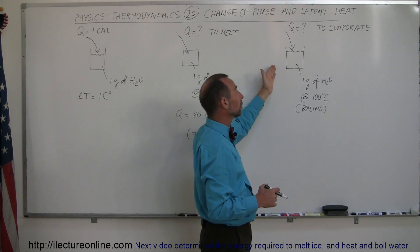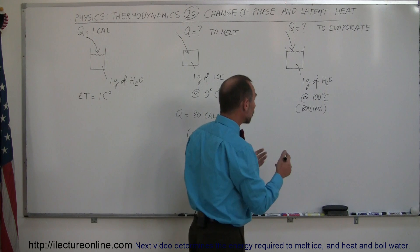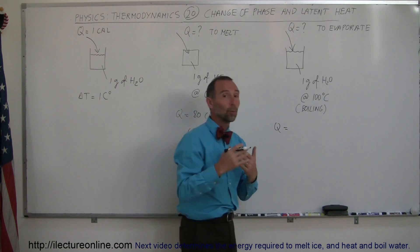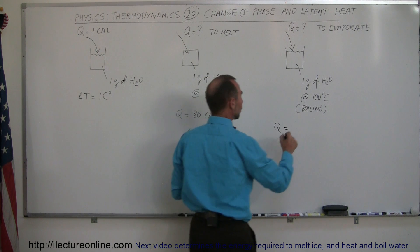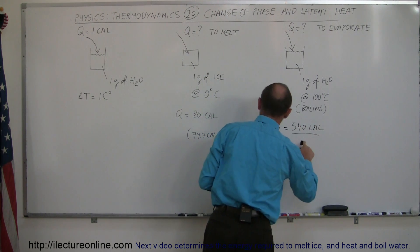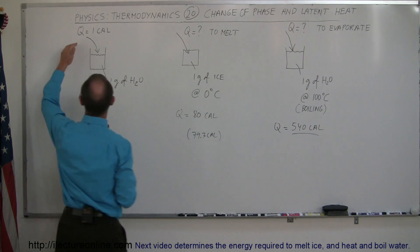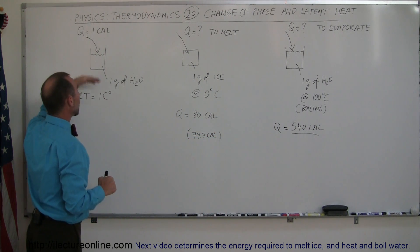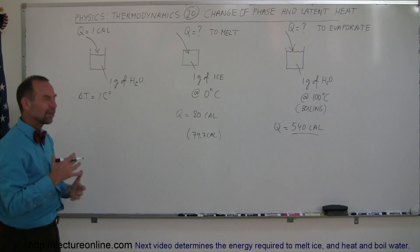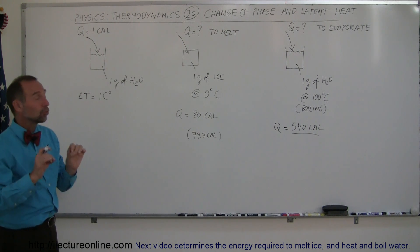When you take boiling water and want to completely evaporate it, it takes even more heat. The Q required to completely evaporate one gram of boiling water is equal to 540 calories - 540 times as much as the energy required to take one gram of water and raise its temperature by one centigrade degree.